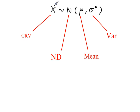So x here is our continuous random variable — that could be a height, weight, temperature, that kind of thing. So x follows a normal distribution, and the normal distribution depends on two population parameters: the population mean and the population variance.